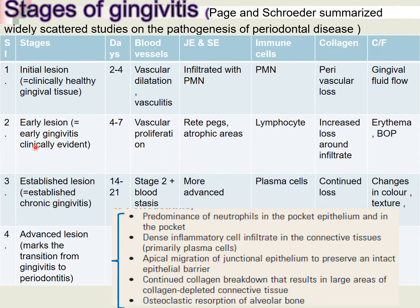When plaque accumulation persists for around four to seven days, the early lesion or early gingivitis becomes clinically evident. Vascular proliferation occurs, the junctional and sulcular epithelium show atrophic areas, and the predominant immune cells are lymphocytes. There is increased loss of collagen around the infiltrate, with erythema and bleeding on probing as the clinical features seen during this stage.